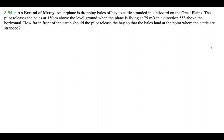An airplane is dropping bales of hay to cattle stranded in a blizzard on the Great Plains. The pilot releases the bales at 150 meters above the level ground when the plane is flying at 75 meters per second in a direction 55 degrees above the horizontal. How far in front of the cattle should the pilot release the hay so that the bales land at the point where the cattle are stranded?